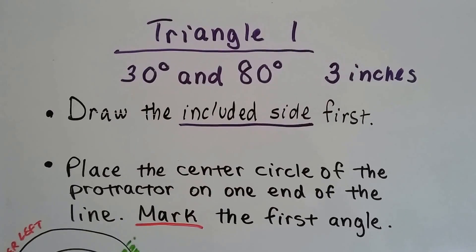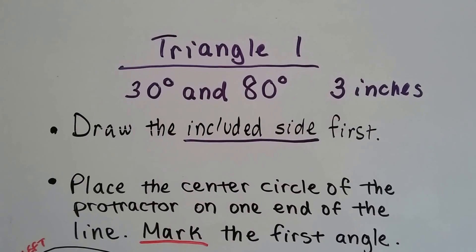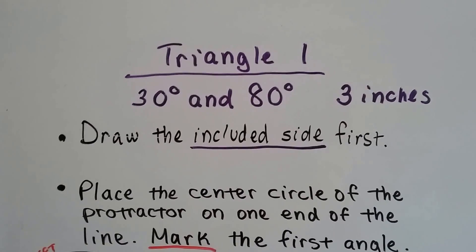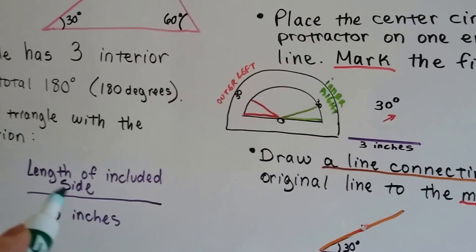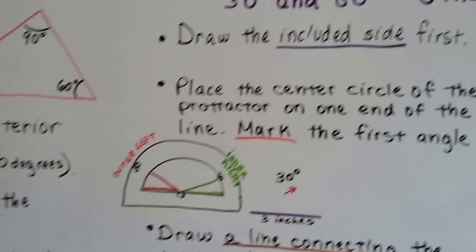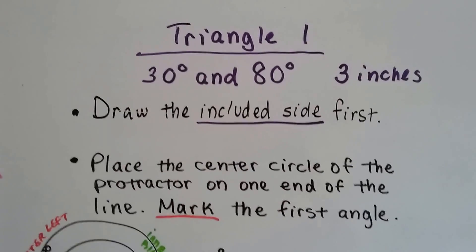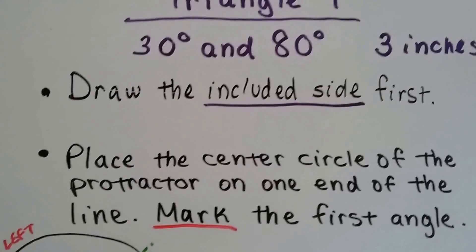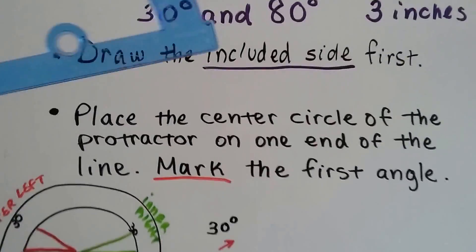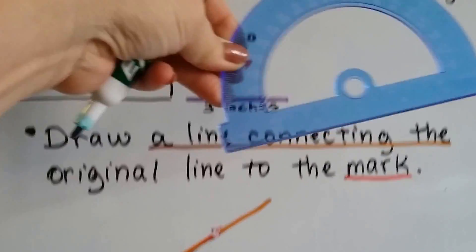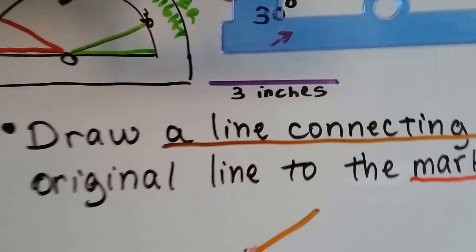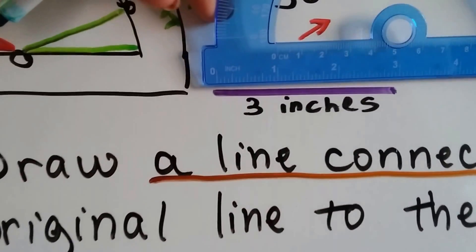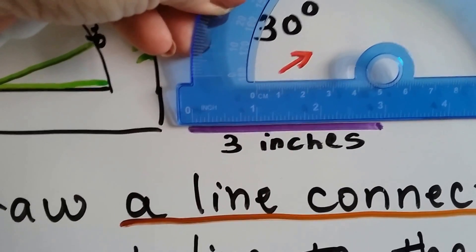For triangle number 1, it said that it was a 30 degree angle and an 80 degree angle with a 3 inch included side. So we draw the included side first. We just draw a 3 inch line. We use the edge of the protractor and we line it up and make a little 3 inch line.